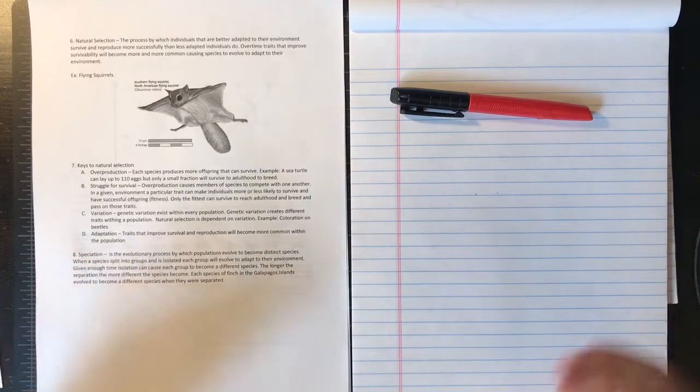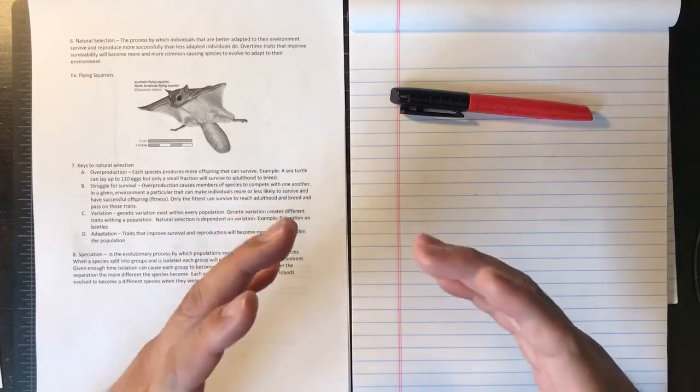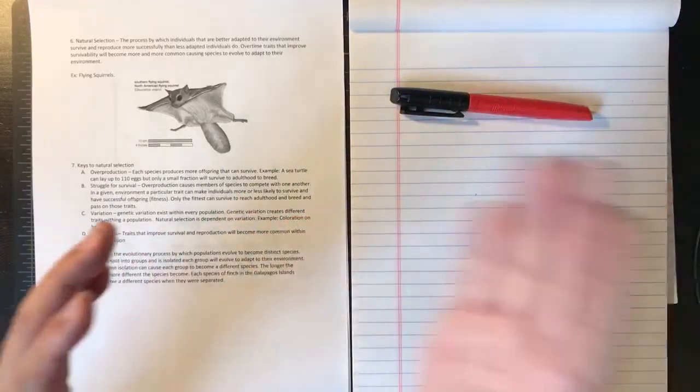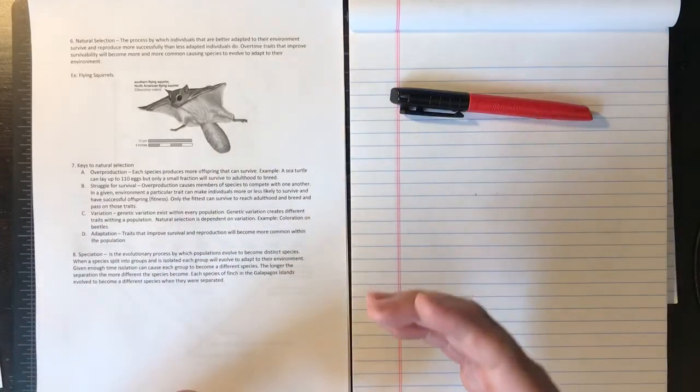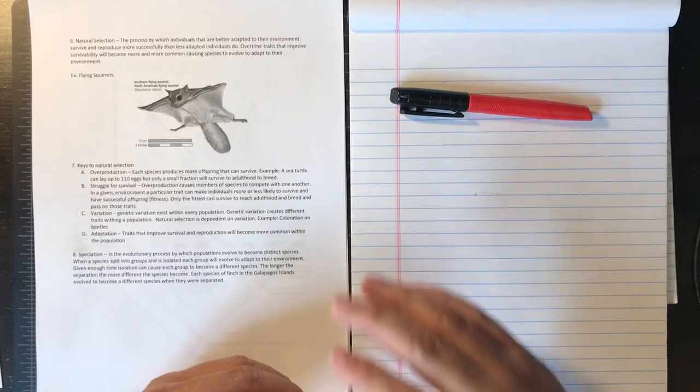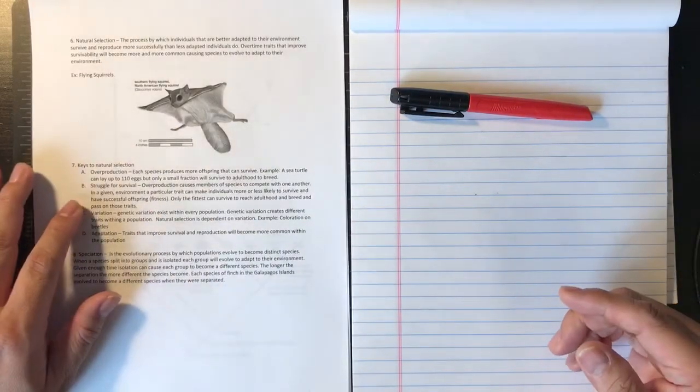Traits that improve the survival and reproduction will become more common within the population. So over time, as traits that help you survive get pushed forward to the next generation and traits that don't get weeded out, over time these traits will be more common and the traits that don't help you will be less common.